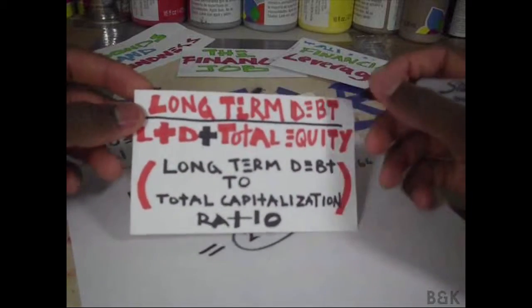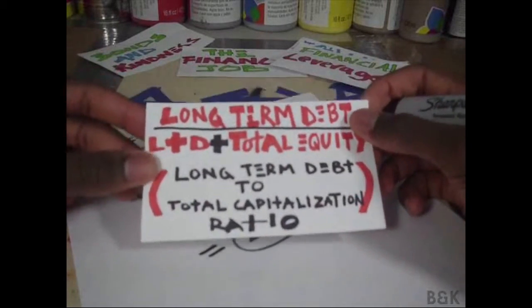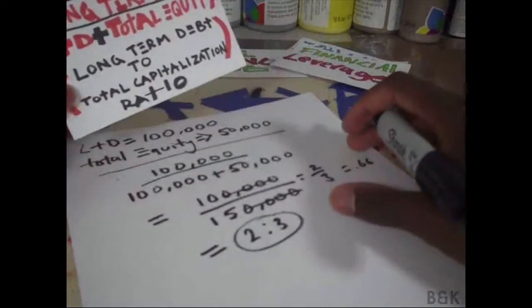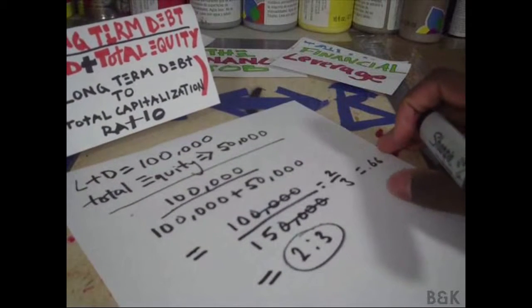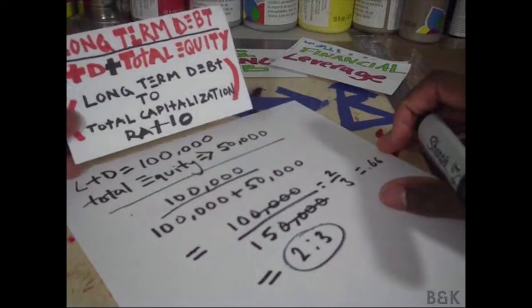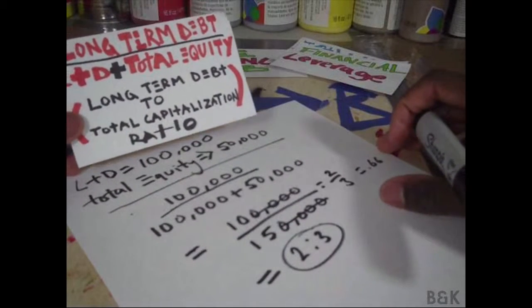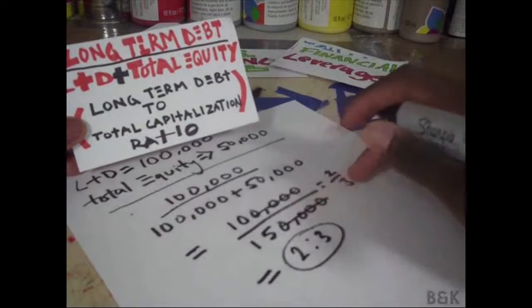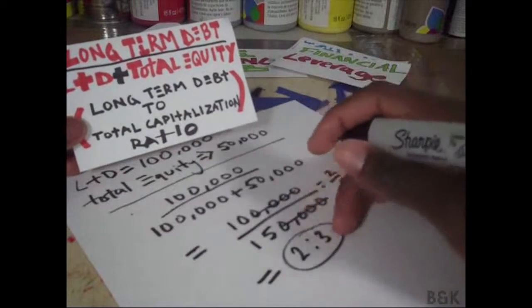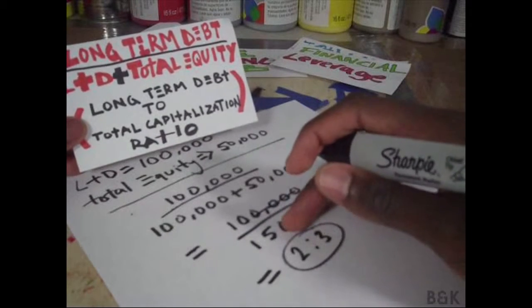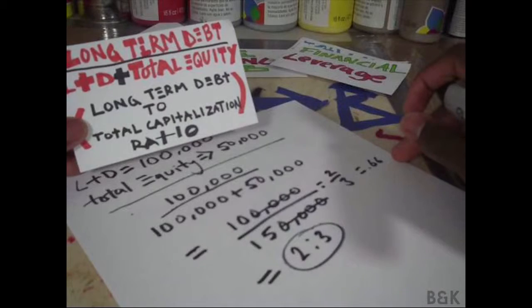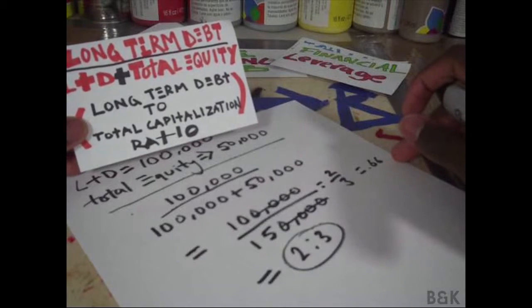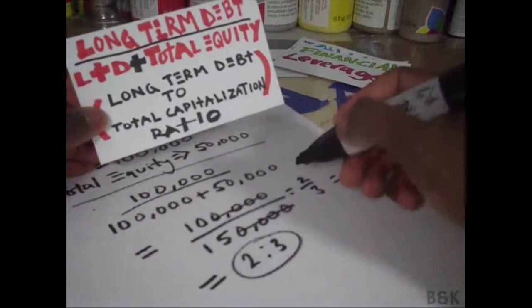I'm sorry I'm not very excited, but this is the formula. You take all your long-term debt, put it on top, divide it by long-term debt again plus total equity — which you'll find on your balance sheet — and then calculate.